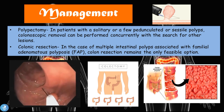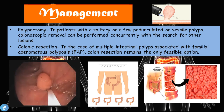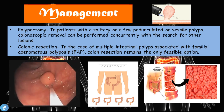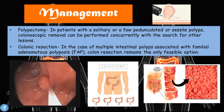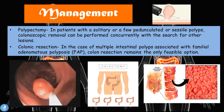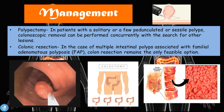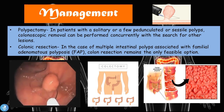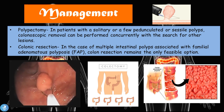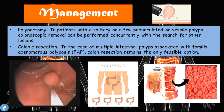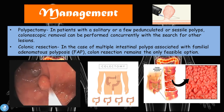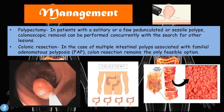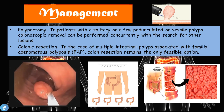Regarding the management of colon polyps: the first option is a polypectomy. In patients with a solitary or a few pedunculated or sessile polyps, colonoscopic removal can be performed concurrently with a search for other lesions. We can also do a colonic resection, and in cases of multiple intestinal polyps associated with FAP syndrome — familial adenomatous polyposis — a colon resection remains the only feasible option.